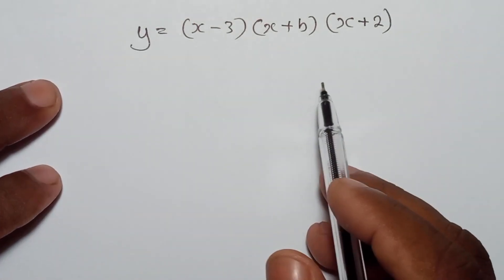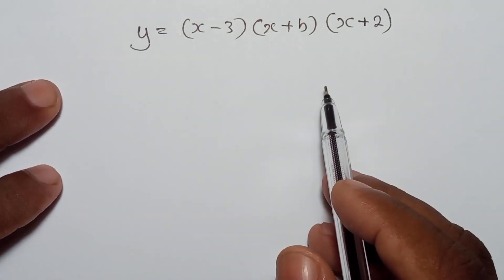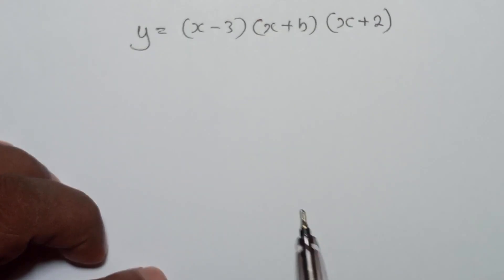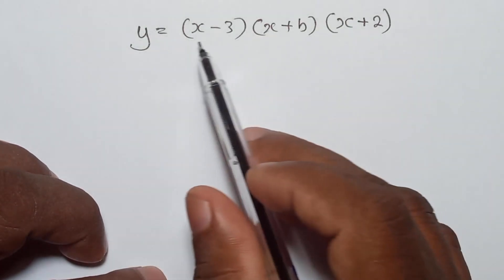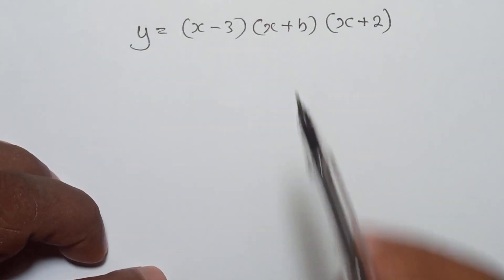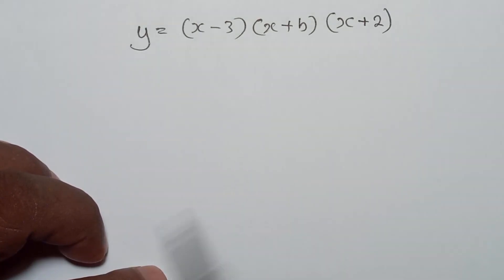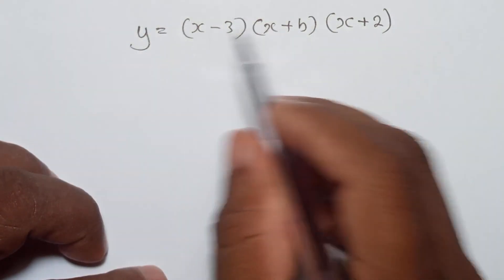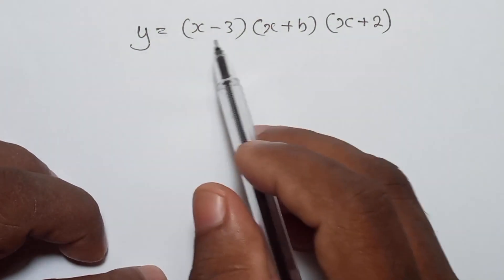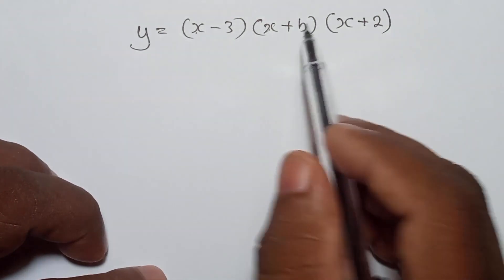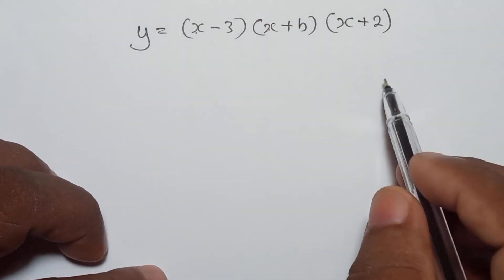This question is a very simple one. They tell us this graph intersects the y-axis at minus 30. Now this will be a cubic graph — when you multiply here, it's an x-cubed term.